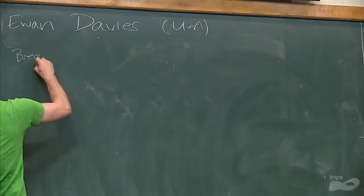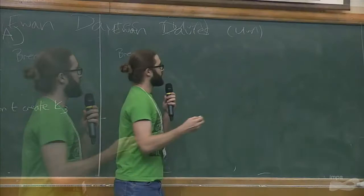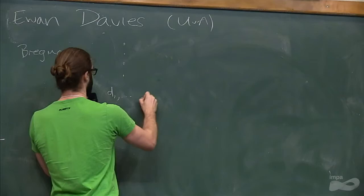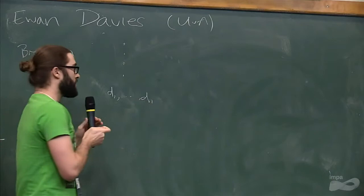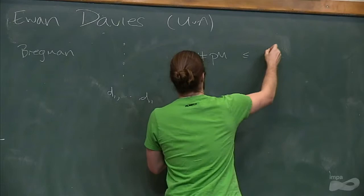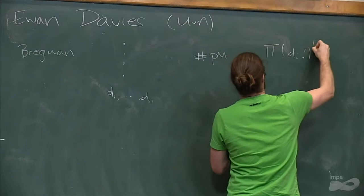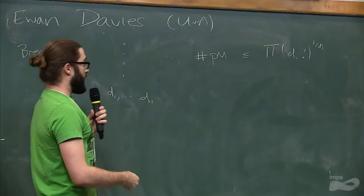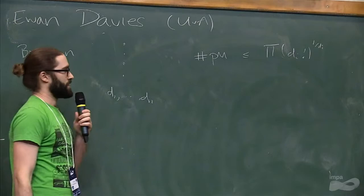There's a theorem of Bregman which says that in a bipartite graph, where you know the degrees of one side, so we call these D₁ up to Dₙ, and this is a bipartite graph with n vertices in each side, the number of perfect matchings is at most the product of (Dᵢ factorial)^(1/Dᵢ). And this is achieved when the Ds are all the same, by disjoint unions of complete bipartite graphs.